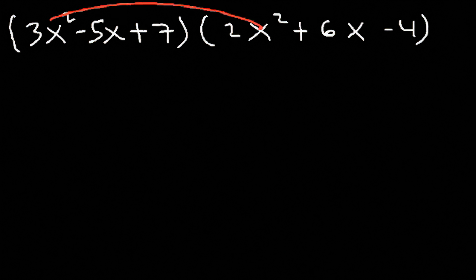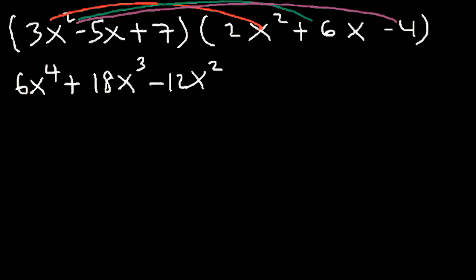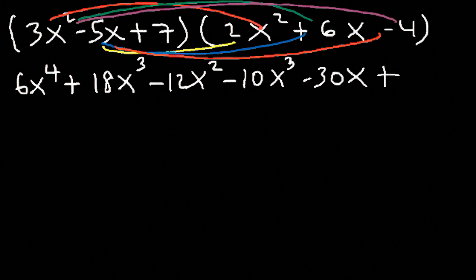3x squared times 2x squared is 6x to the 4th power. 3x squared times 6x is 18x cubed. 3x squared times negative 4 is negative 12x squared. Next, negative 5x times 2x squared is negative 10x cubed. Negative 5x times 6x is negative 30x squared. And negative 5x times negative 4 is 20x.